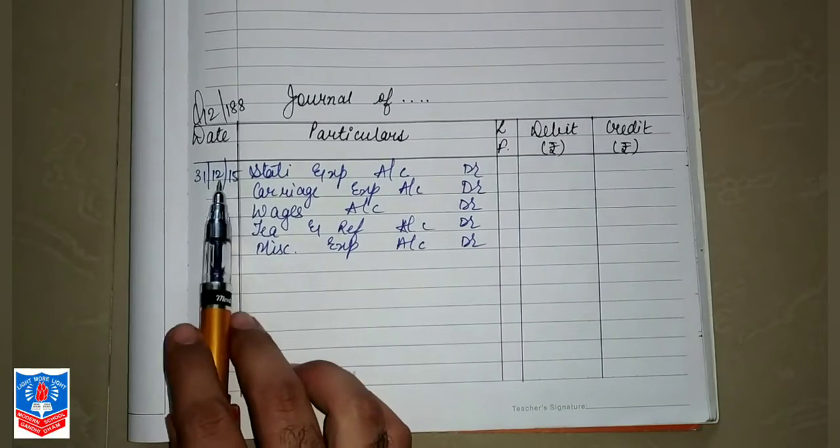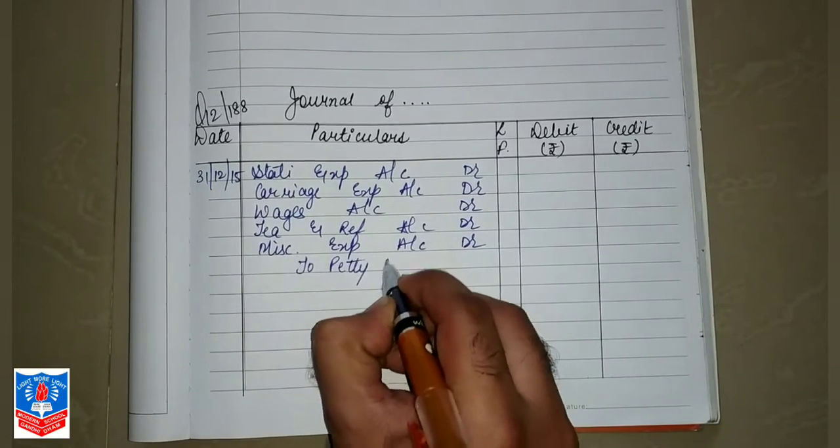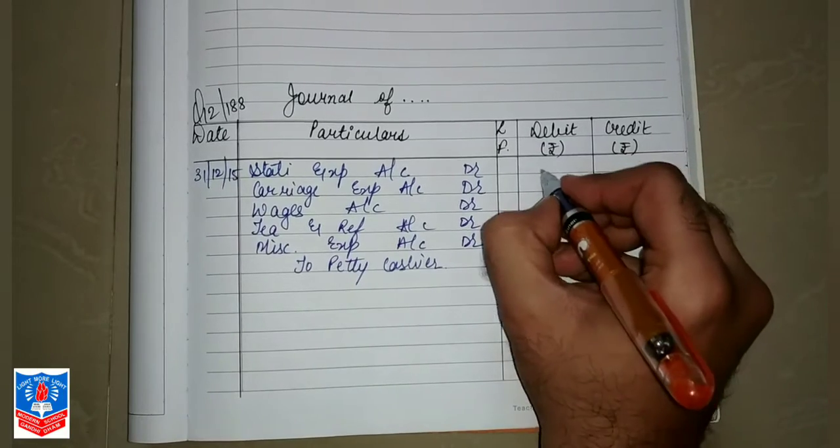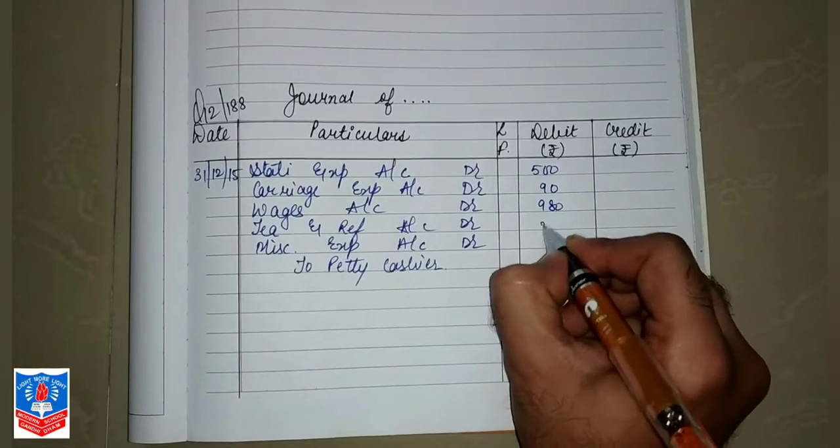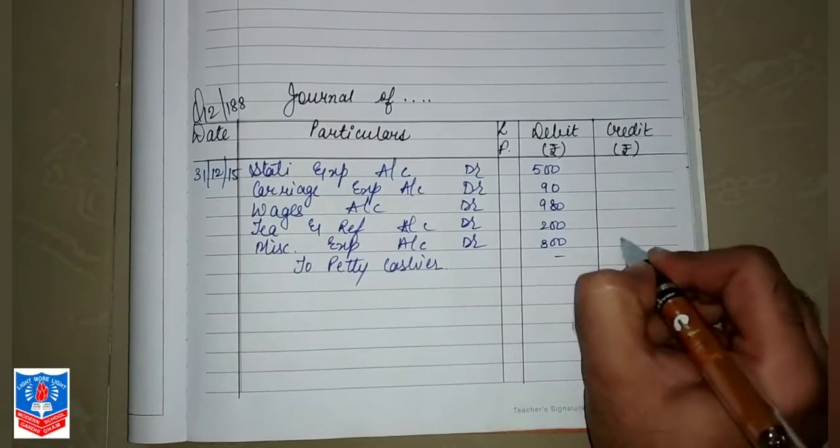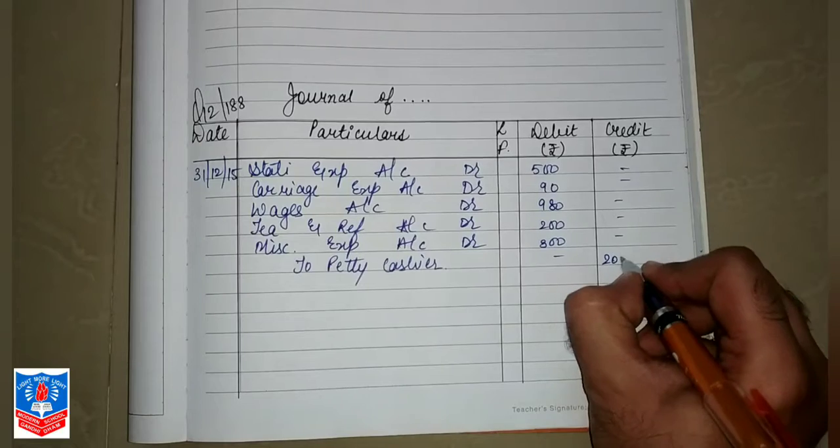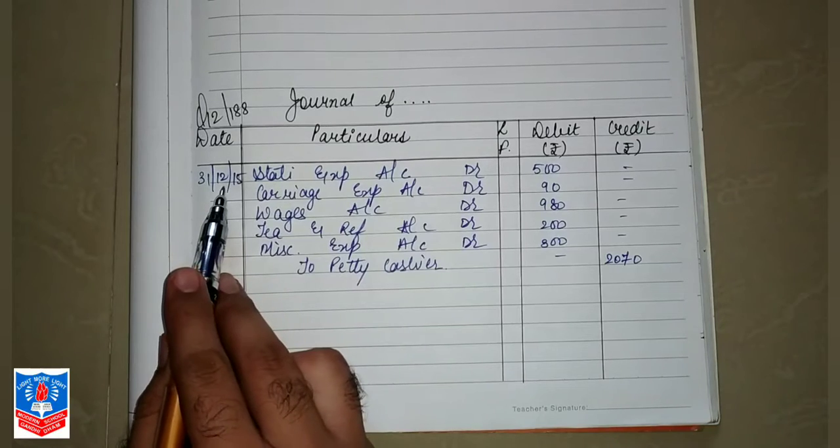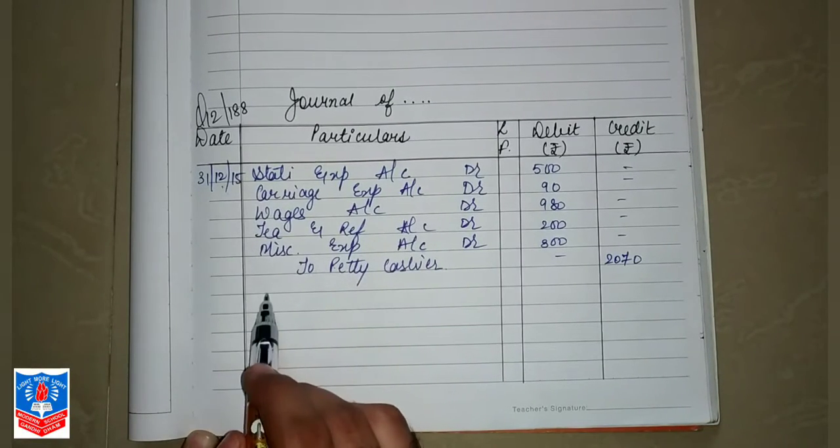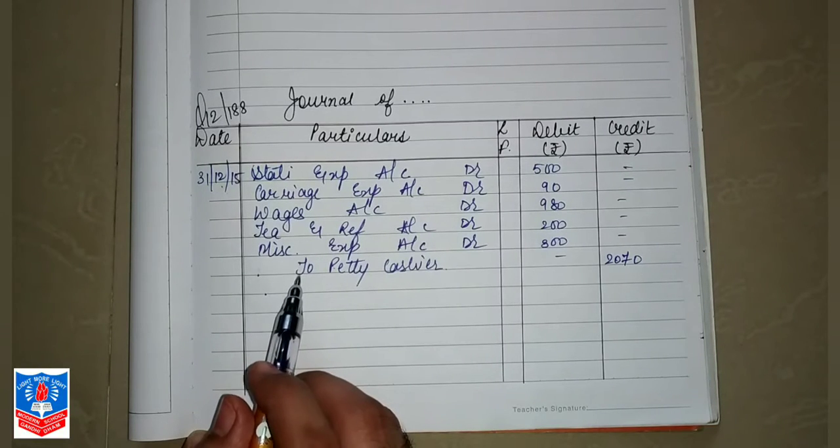Who has paid all these expenses? Petty cashier is the giver, to petty cashier. Stationary is 500, then 90, then 980, 200 and 300. The total of all these expenses will turn up to 2070. This is the month ending when petty cashier has done all these expenses. These are the balances which are being extracted from the petty cash book which is based on impressed system.